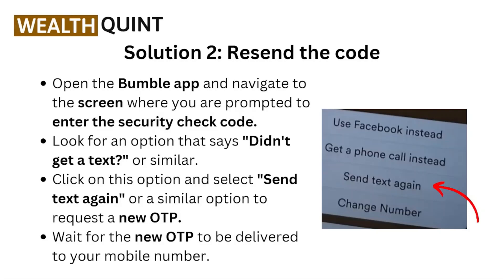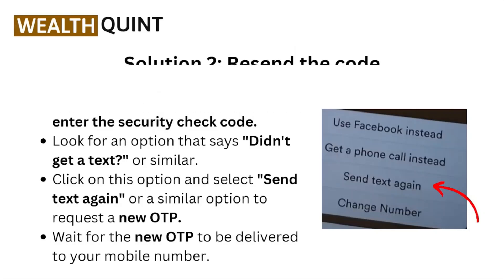Solution number two: resend the code. Open the Bumble app and navigate to the screen where you are prompted to enter the security code. Look for the option that says 'Get a text' or similar, click on it, and select 'Send text again' or a similar option to request a new OTP. Wait for the new OTP to be delivered to your mobile number.